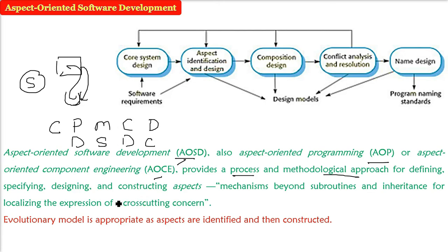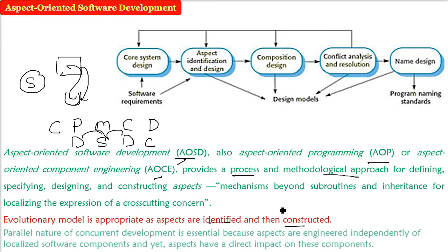The evolutionary model is very appropriate here because aspects have to be identified and constructed. The evolutionary model is quite good for AOSD, AOP, and AOC. We also need a parallel, concurrent development approach, because aspects are engineered independently of localized software components and yet have a direct impact on those functions and components. So here we focus on DSDC, not the full communication, planning, and modeling-construction-deployment framework.